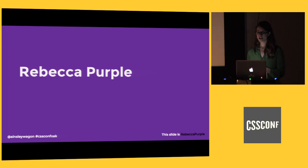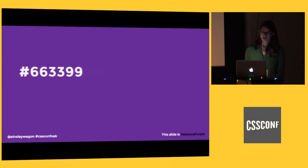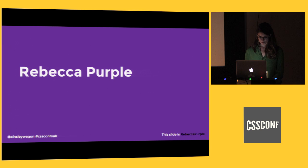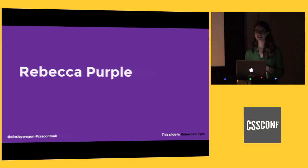Almost exactly six months ago, Eric Meyer — a big writer about CSS and web standards — his six-year-old daughter Rebecca passed away after a battle with pediatric brain cancer. In her memory and in their honor, a proposal was submitted to name the color #663399 after Rebecca and call it Rebecca Purple. This is a really incredibly human, touching story of color naming — a great moment in the history of the internet — and I was hungry for more stories like this behind the naming of colors.